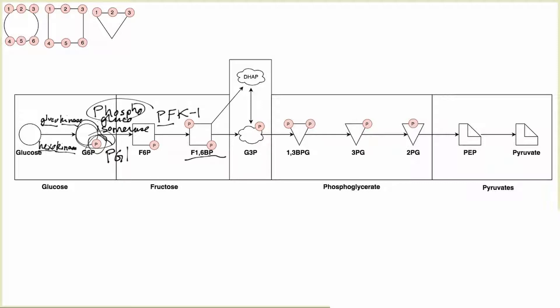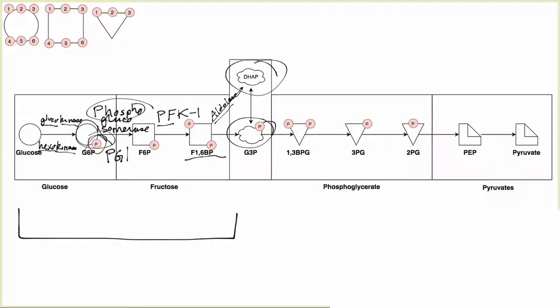The next enzyme doesn't really follow any convention unless you know the structure of fructose-1,6-bisphosphate. This is an aldolase enzyme — 'aldolase' just refers to alcohol groups present in fructose-1,6-bisphosphate. Aldolase converts fructose-1,6-bisphosphate into dihydroxyacetone phosphate and glyceraldehyde-3-phosphate. These are both three-carbon compounds, whereas glucose and fructose had six carbons.